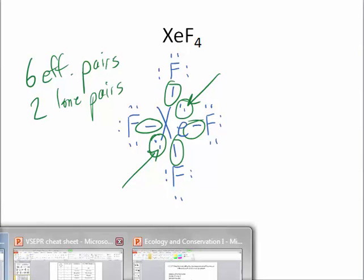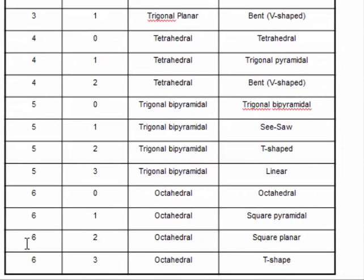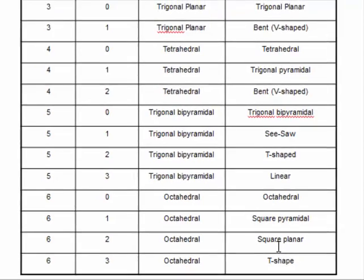So again, we look at our chart. And we see that six effective pairs and two lone pairs. The parent geometry is called octahedral. And the actual molecular geometry is called square planar.